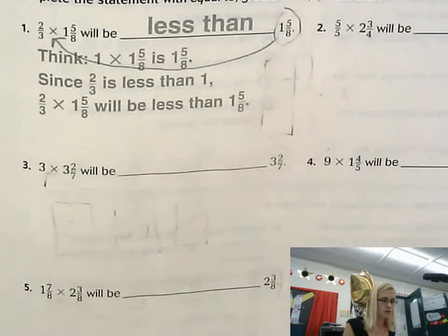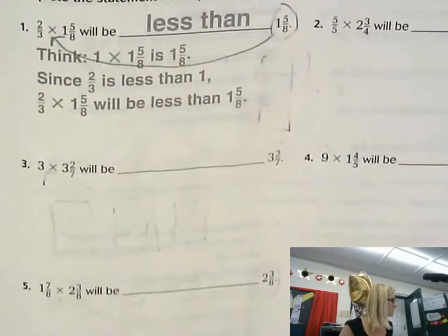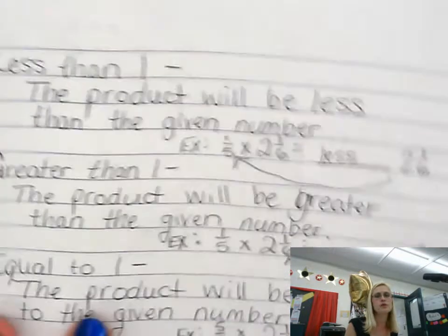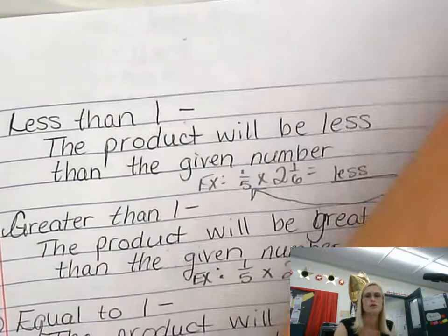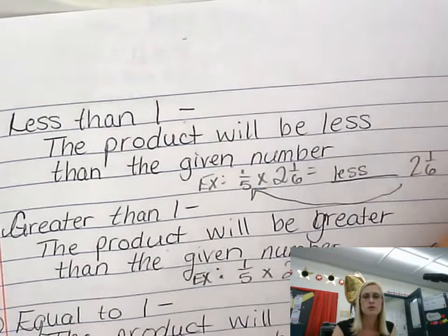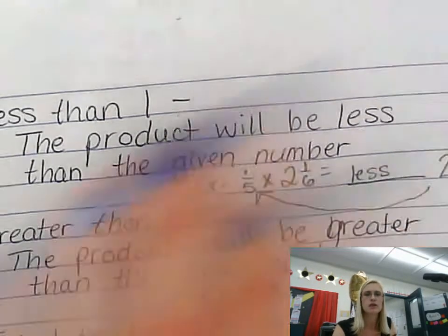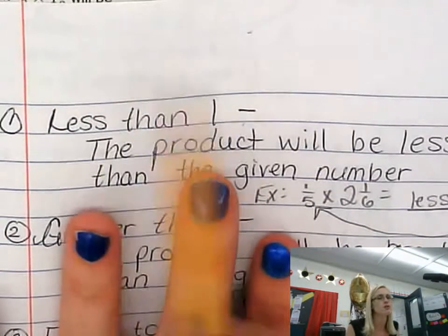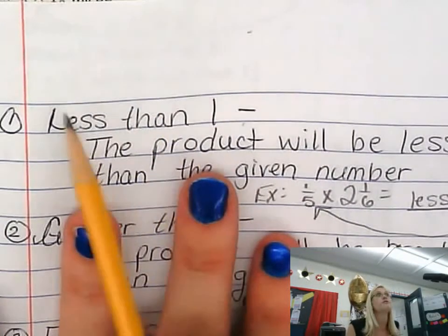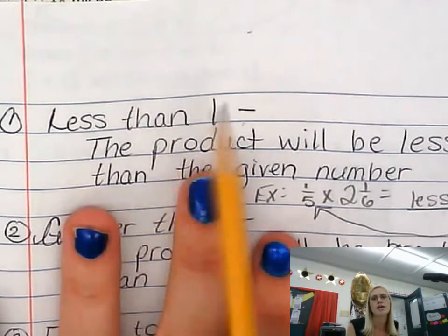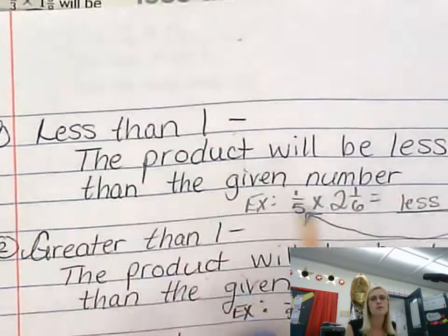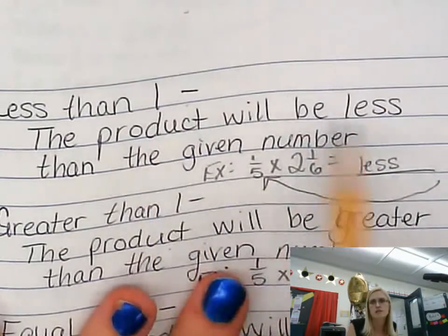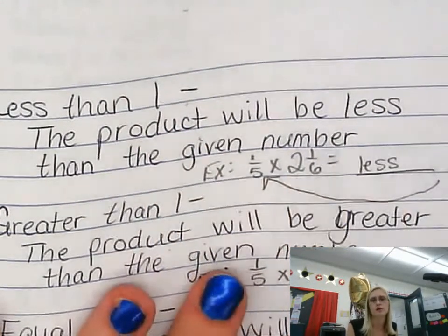Before we even start, we're going to look at some of the rules we use when multiplying. The first rule: if the factor that we're comparing to is less than 1, then the product is going to be less than the given number.